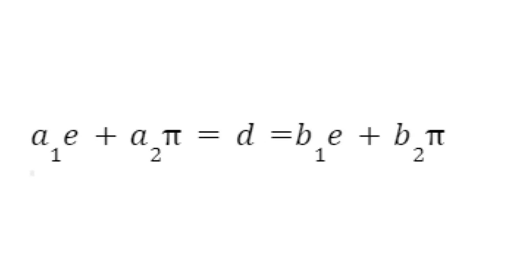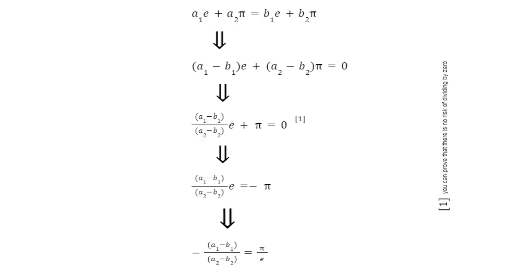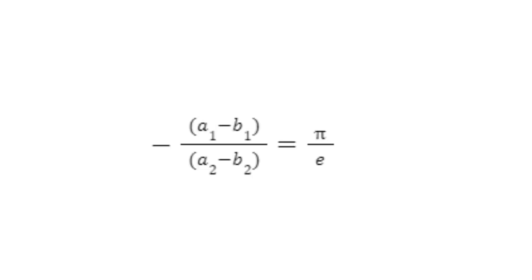Well, if that scenario was true, we will be able to conclude that pi over e could be written using a1, a2, b1, and b2.